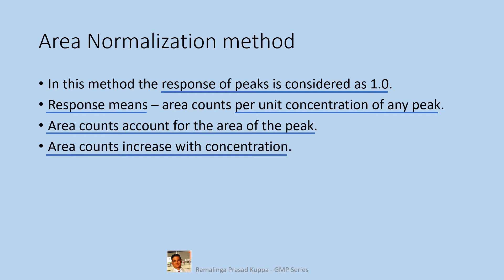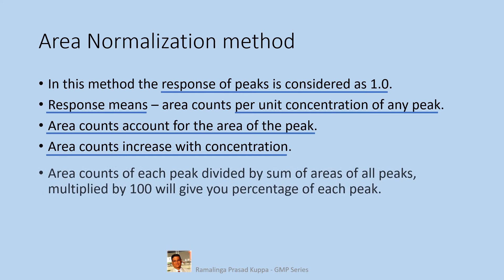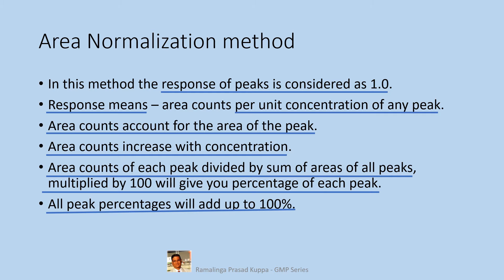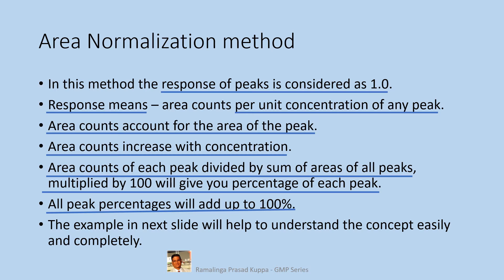Area counts increase with concentration — obviously, if the concentration is more, the area will be more and the area counts will also be higher. Area counts of each peak divided by the sum of areas of all peaks, multiplied by 100, will give you the percentage of each peak. All peak percentages will add up to 100%. Add up all the peak percentages, it will be 100% always.